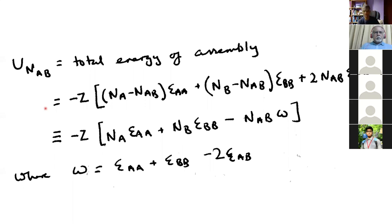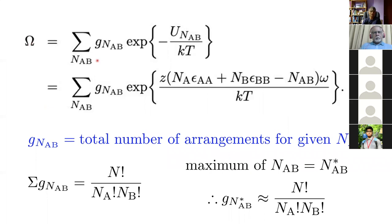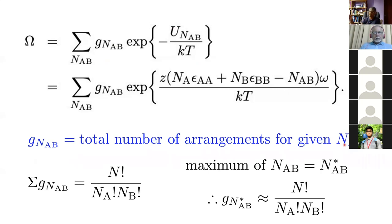Now let's construct a partition function for a system with multiple energy states. Our equation has the number of AB bonds, the degeneracy of states for that number of AB bonds — since you can have different numbers of AB bonds depending on how atoms are arranged — and a summation over the degeneracies for all possible N_AB values and corresponding internal energies U(N_AB).